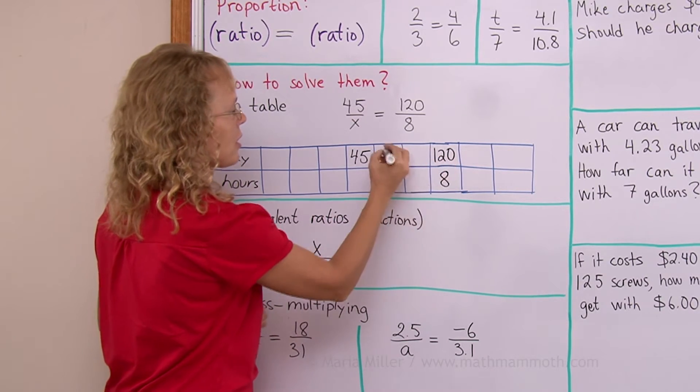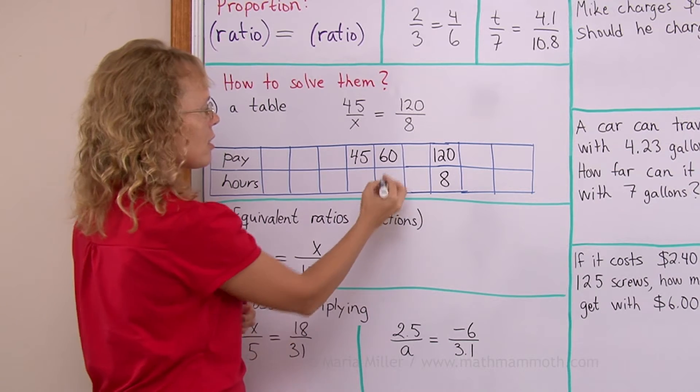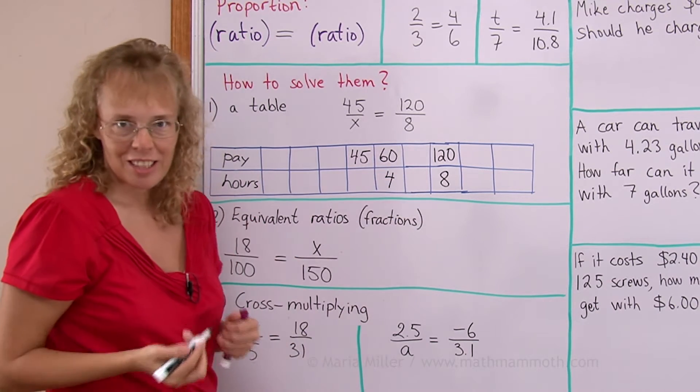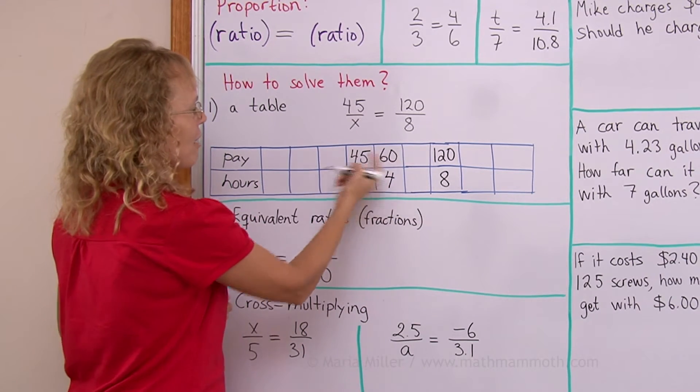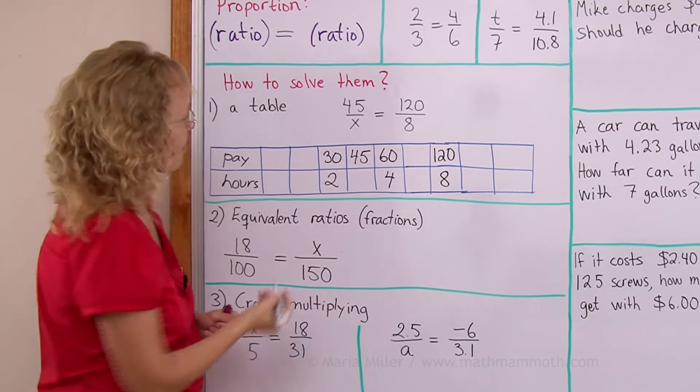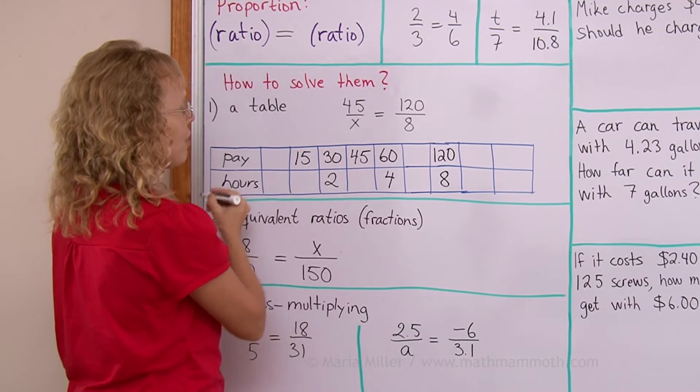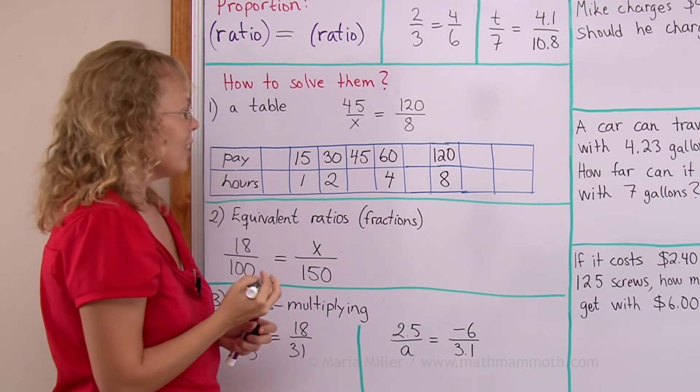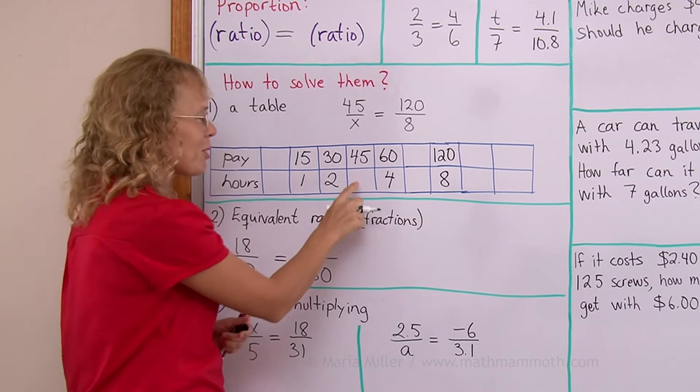And then I can think different things. For example, I could take half of this. If it is 60 dollars, then it would be four hours, right? And then I could take half of 60 and get 30. 30 dollars for two hours. Take half of that and get 15 dollars for one hour. And then surely by this point, you can see what goes here, right?